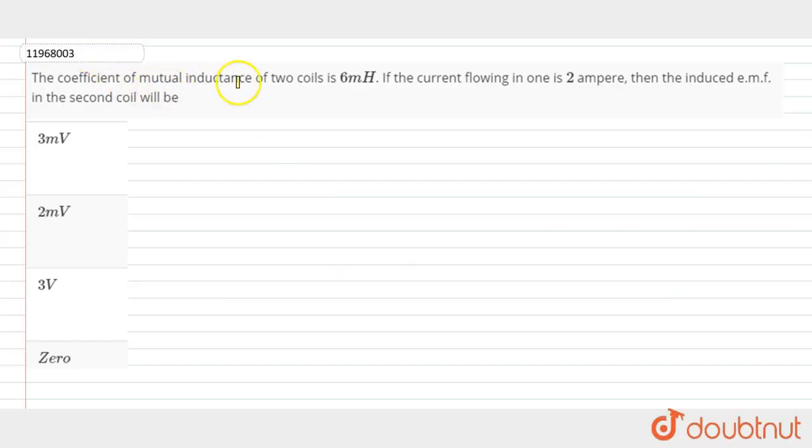So in this question, we have given the coefficient of mutual inductance of the two coils is 6 mH. If the current flowing in one is 2 ampere, then the induced EMF in the second coil will be.